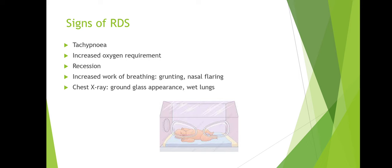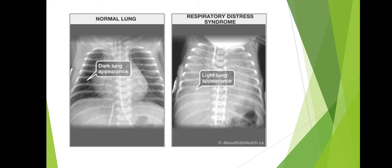We can also get a chest X-ray to confirm this. The things we're looking for on chest X-ray include that ground glass appearance, which may indicate wet lungs or RDS. Looking at the chest X-ray here: on the left is a normal chest X-ray with normal lungs — you have that dark lung appearance which is the air within the lungs. On the right is a baby with RDS, showing a lighter, denser lung appearance, indicating there isn't adequate air within those lung fields. There are quite patchy areas, which goes hand in hand with the clinical picture and confirms RDS.